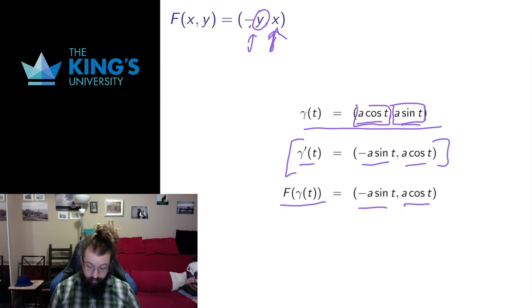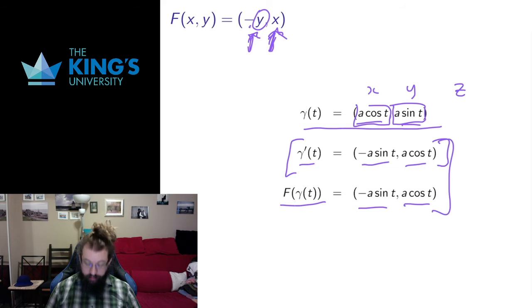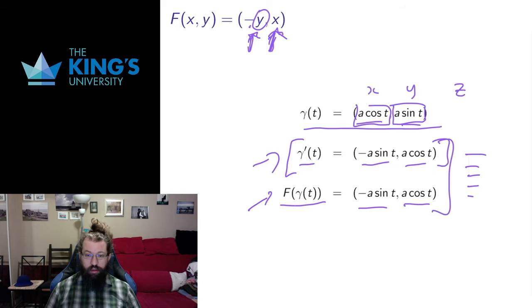Evaluating the vector field on the parametric curve means taking the components x, y (and z if in R3) and replacing those variables in the expression for the vector field. If I do that, I get exactly the same thing as γ′. These will both be equations of t. Whenever I do this calculation, these are both vectors that depend on t, and they have to be the same in each component for this to be an integral curve.